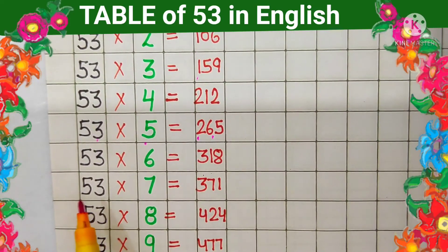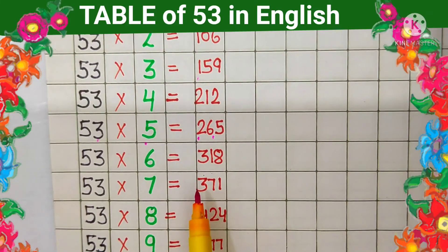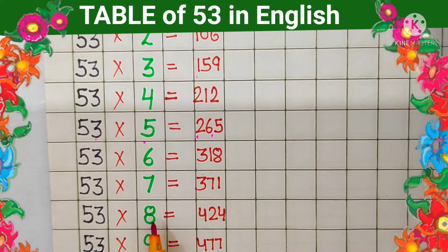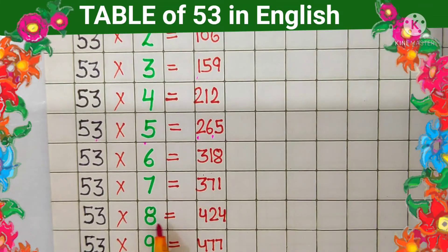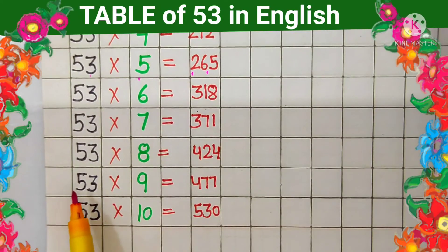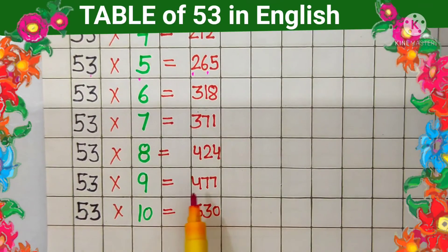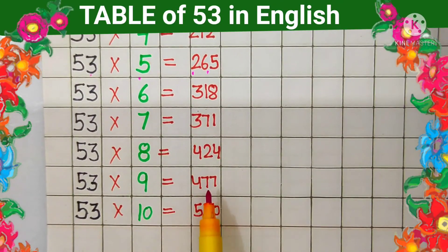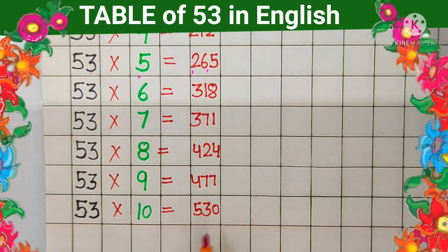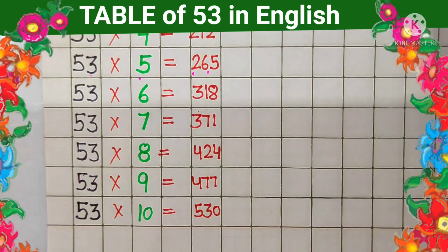53 sevens are 371, 53 eights are 424, 53 nines are 477, 53 tens are 530. Okay, thank you.